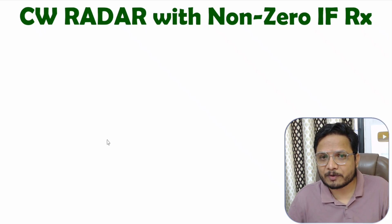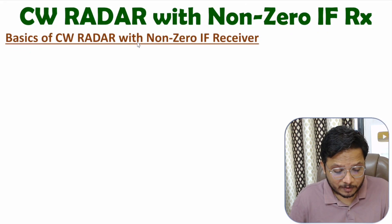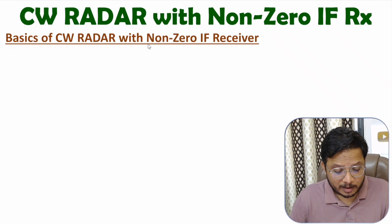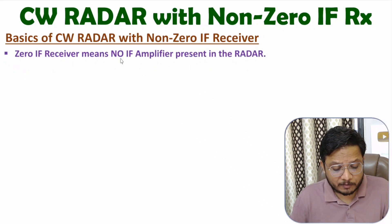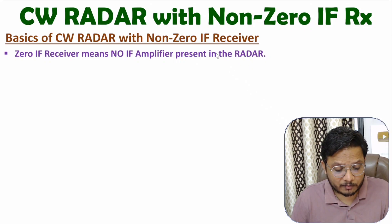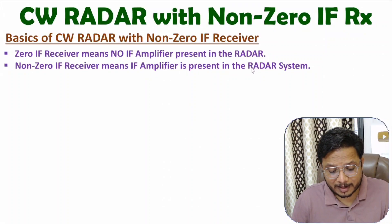Let us begin with the first agenda: basics of CW radar with non-zero IF receiver. First of all, you need to understand what is the meaning of non-zero IF receiver. If you have a zero IF receiver, then we don't have an IF amplifier in the receiver of the radar system. With a non-zero IF receiver system, we will be having an IF amplifier in the receiver of the radar system.